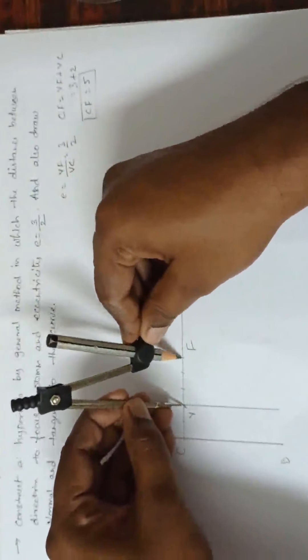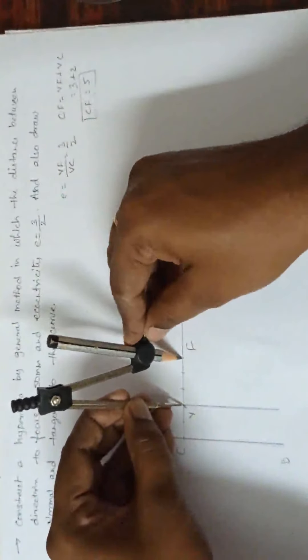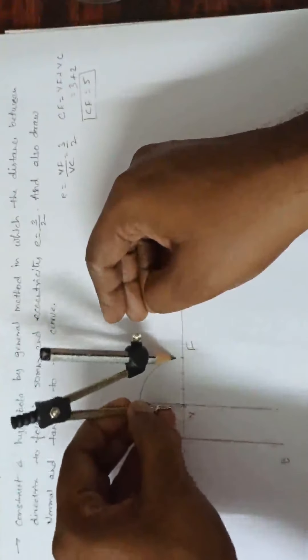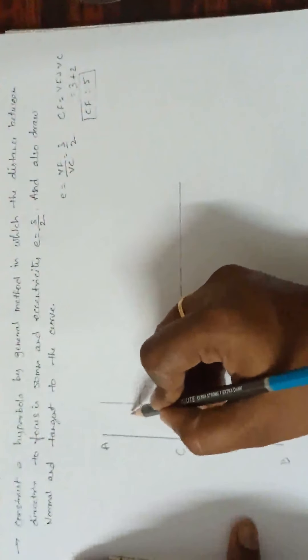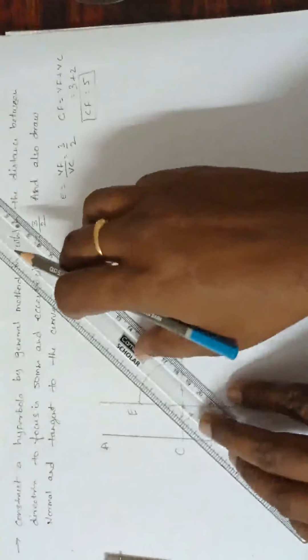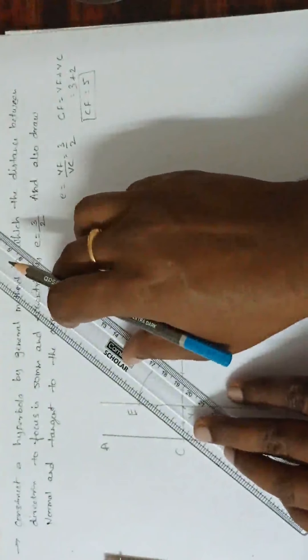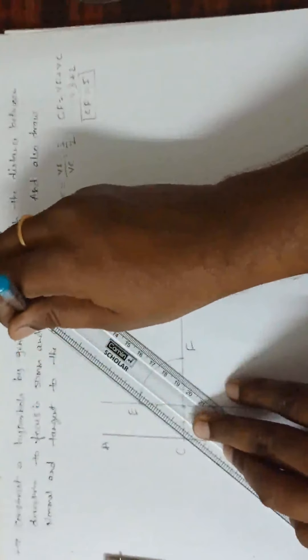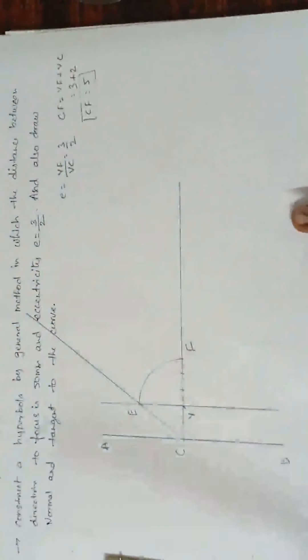Take a radius VF. V as the center. Draw the curve like this. Now, this is the point E. Join CE. Join CE like this.